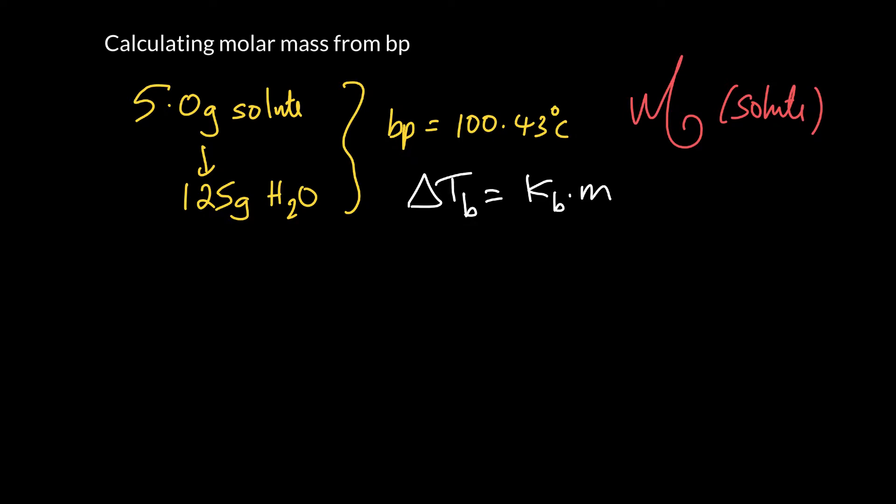Okay, so what is the changing boiling point? Well, the changing boiling point, it went up. Okay, so we need to know how much did it go up by. So 100.43 and the regular boiling point of water is 100.0000 whatever degrees Celsius. So we can see that it increased by 0.43 degrees C. So what is that telling us here?